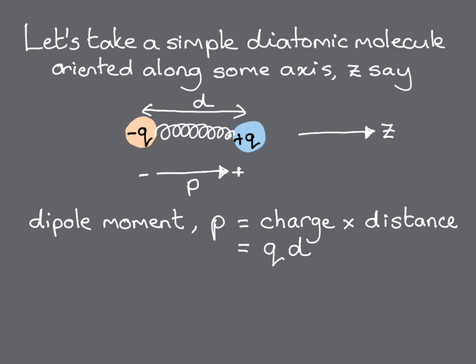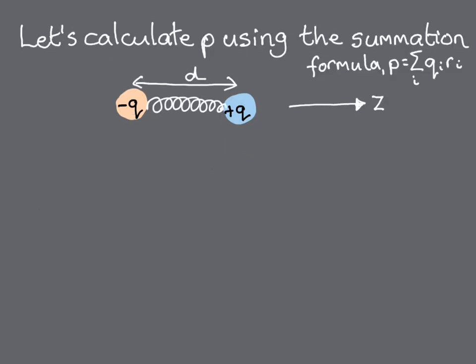Of course, in general, things can be more complicated. For example, if there are more than two ions in the molecule, we should calculate the dipole moment by summing over all the charges on the ions times their positions. Let's do that for our simple diatomic molecule, and first we'll take the anion on the left to be at the position z is equal to zero. Then our dipole moment is given by the charge on the anion, minus Q, multiplied by its position, zero, plus the charge on the cation, plus Q, times its position z is equal to D, which reduces to Q times D, as expected.